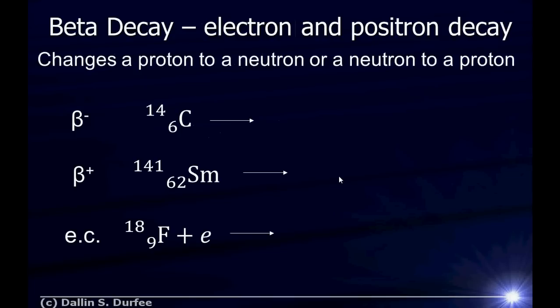Beta decay is really three types of decay, and it involves electrons and positrons getting involved in the nucleus. A positron is an anti-electron. Anti-matter is real — it's like regular matter except an anti-particle has the opposite charge of a particle. So the electron's anti-particle is the positron; it has a positive charge instead of a negative charge. Beta decay changes a proton to a neutron or a neutron to a proton, and it uses electrons and positrons to do that.